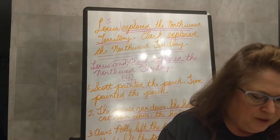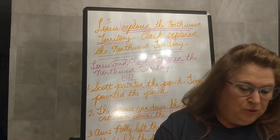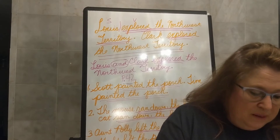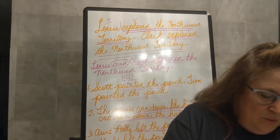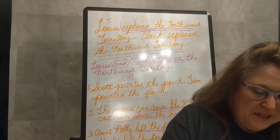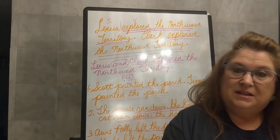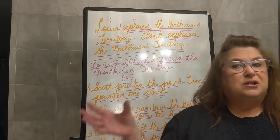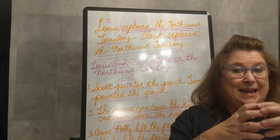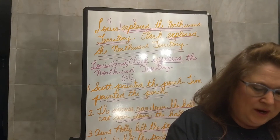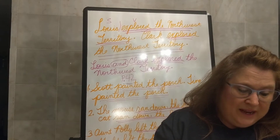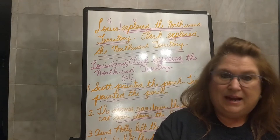Alright, so look at page 43. On page 43, we're going to underline the verb two times, underline the subject one time, and write simple in the blank if the sentence has a simple subject, and write compound if the sentence has a compound subject. Remember the compound subject is going to be joined by and. Number one: Heat, water, and air are involved in a weather forecast.